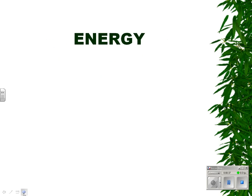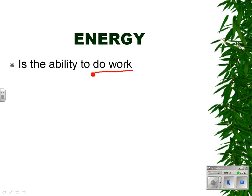So, energy. The book definition of energy is the ability to do work — this is directly out of your 7th grade science book. And work is defined as moving something. So the ability to move something is essentially what we have here.